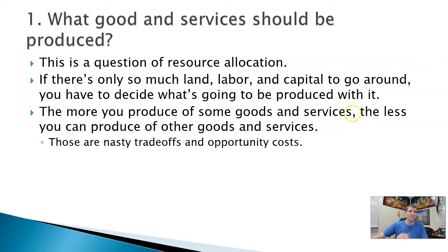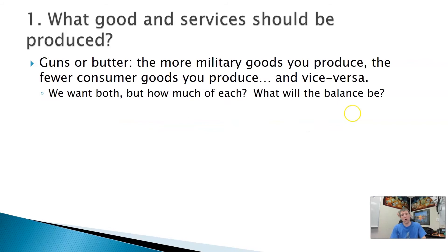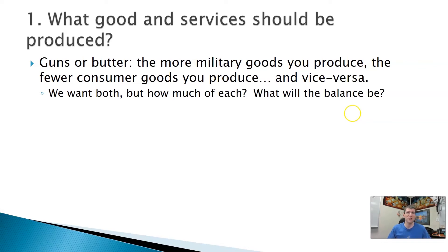This is all about resource allocation — what are we going to make with the limited resources we have, knowing we have to give up something else to produce something. That's the opportunity cost. If we produce a tank with our steel, the opportunity cost would be the washing machines or cars we would have produced instead. That's the guns-or-butter scenario, and we looked at that with the production possibilities curve. You can have military goods or consumer goods, but if you use resources for one, you can't use them for another. You don't want one or the other — you want both. So the question is: what is the balance going to be between the two?